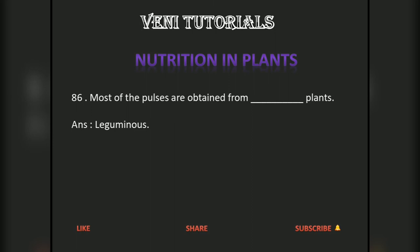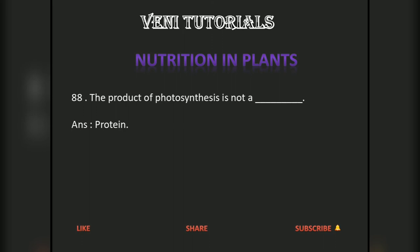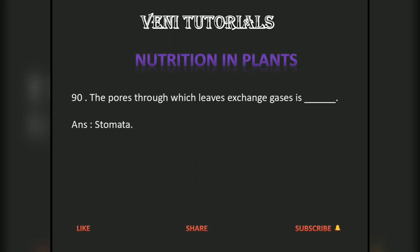Most of the pulses are obtained from legume plants. A plant that has both autotrophic and heterotrophic modes of nutrition is the pitcher plant. The product of photosynthesis is not a protein. The pores through which leaves exchange gases are called stomata.